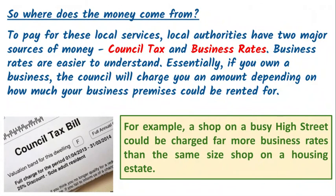Where does the money come from to pay for these services? Local authorities or local government have two major sources of money: council tax and business rates. Business rates are easier to understand — if you own a business, the council charges you an amount depending on how much your business premises could be rented for. A shop on a busy high street could be charged far more than the same-size shop on a housing estate, which is why you very often see local high streets with empty shops because they're expensive to run.